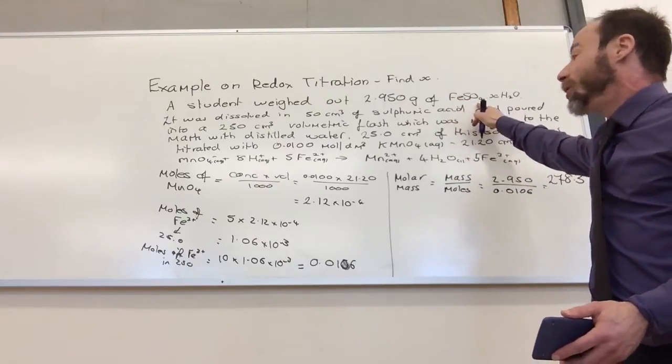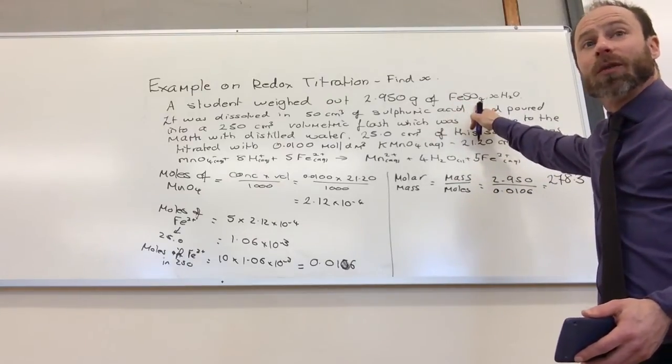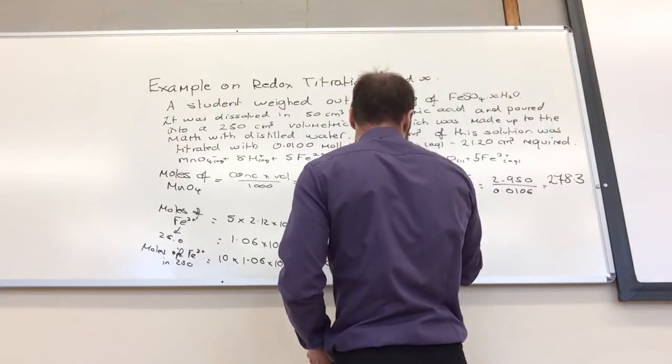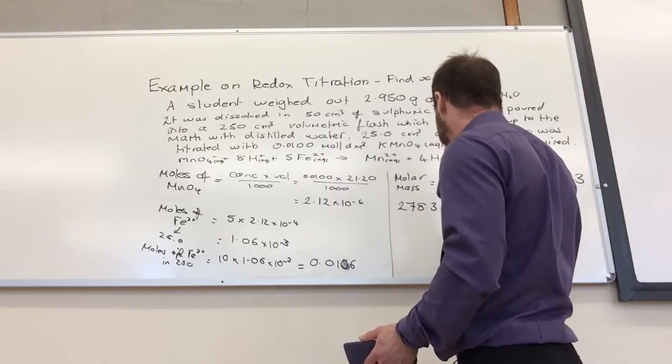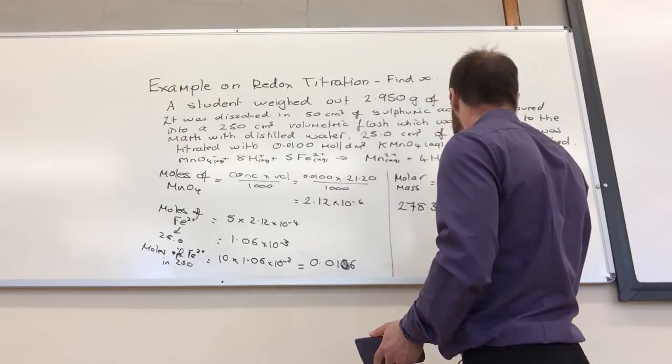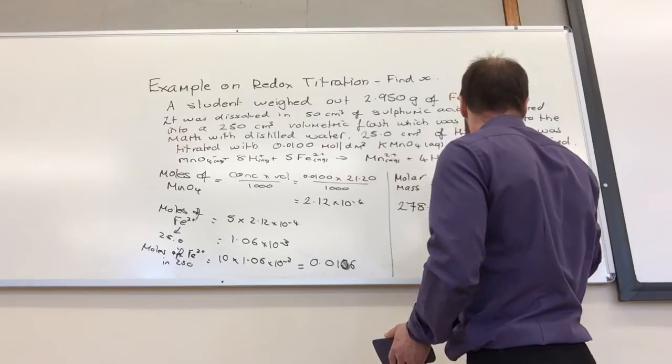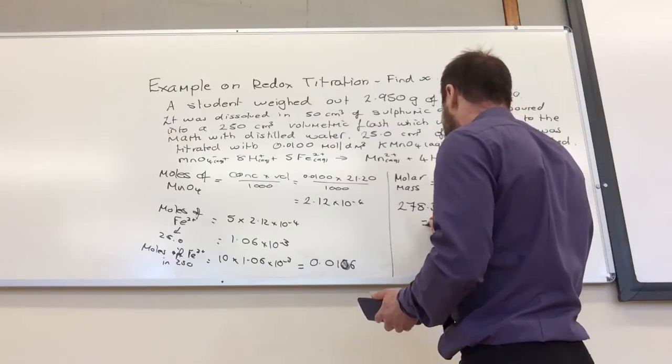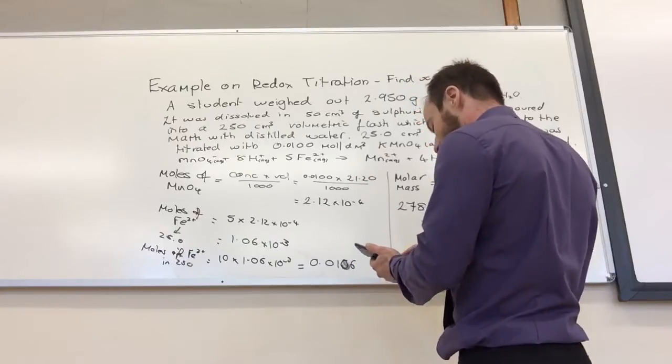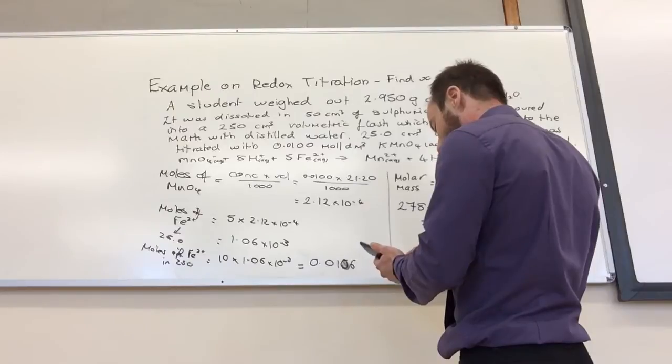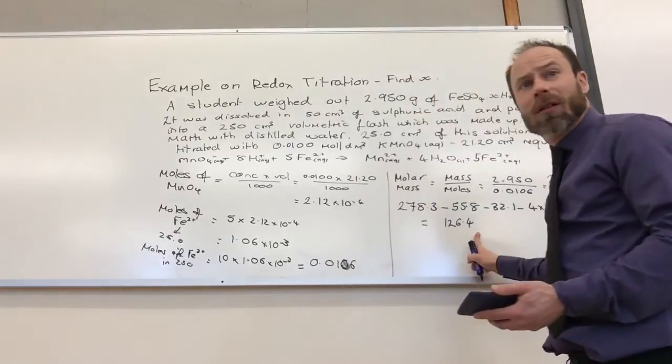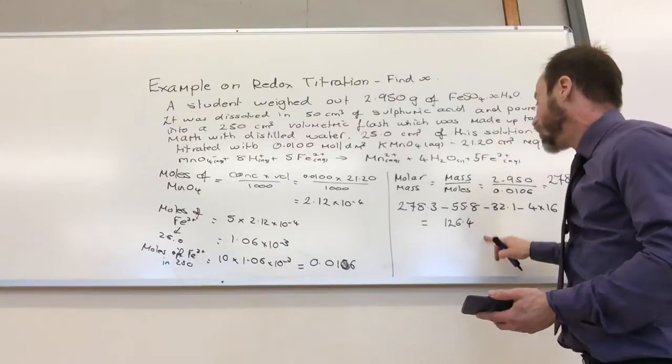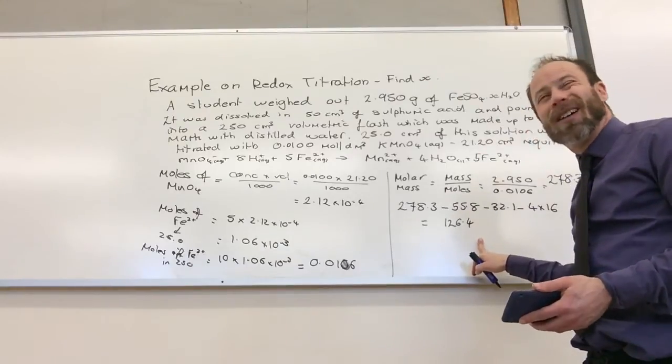So, from that, I need to remove my iron, sulfur, and oxygen. So, it's 278.3 minus iron, which is 55.8, minus sulfur, 32.1, and minus 4 times 16 for oxygen. So, minus 55.8, 32.1, and 4 times 16. That gives me 126.4. So, all my waters add up to 126.4.